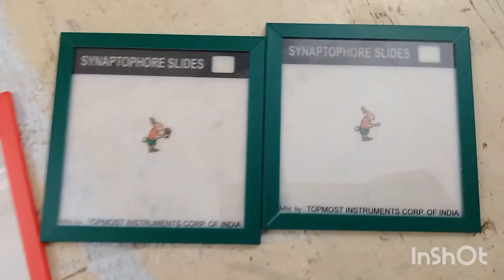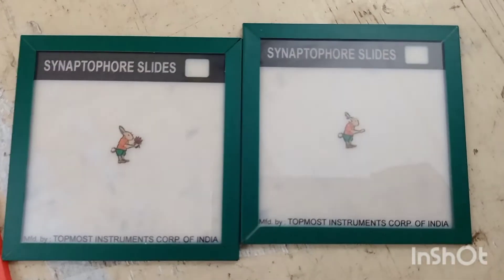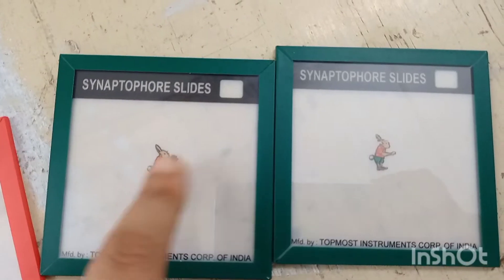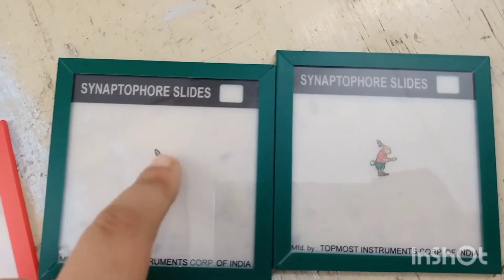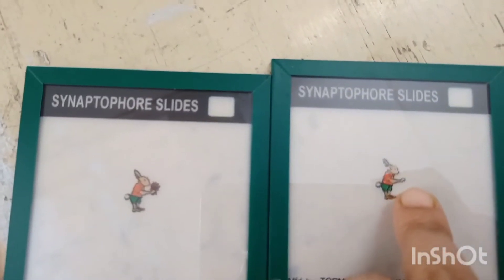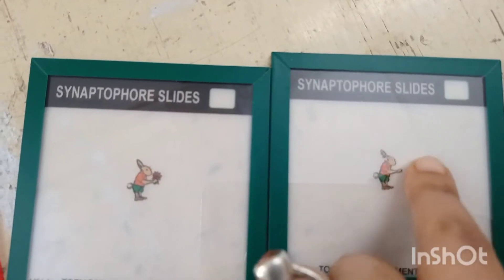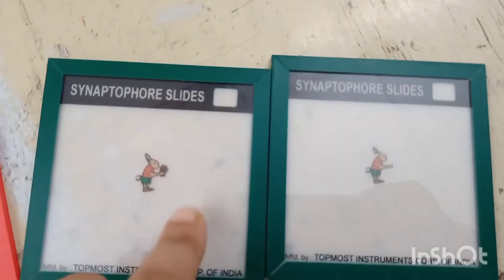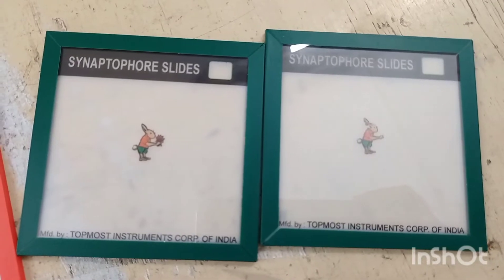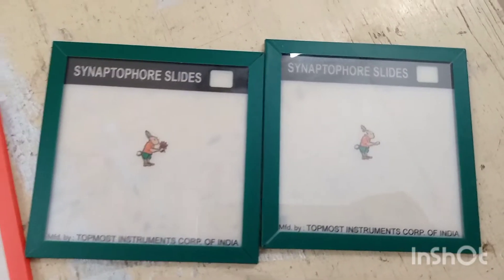Then comes the fusion slide. You can see that the rabbit is incomplete in some details — one is having the bunch of flowers in one hand, the other is having the tail. When we see through both eyes, we will see a fused image of the rabbit. The fusion slide is basically used to maintain fusion to find out NFV and PFV.